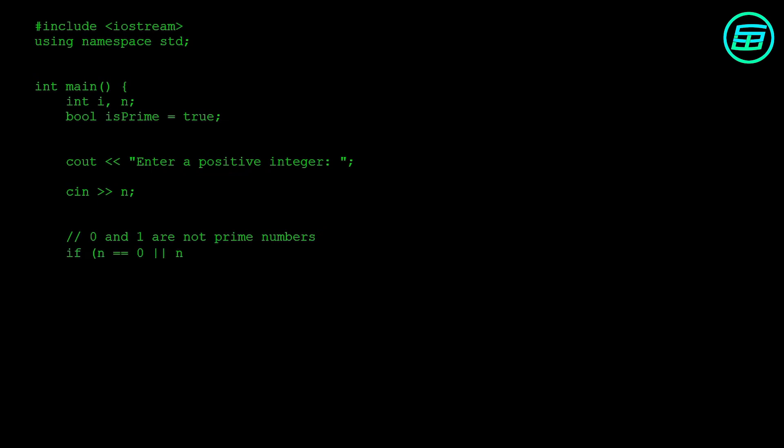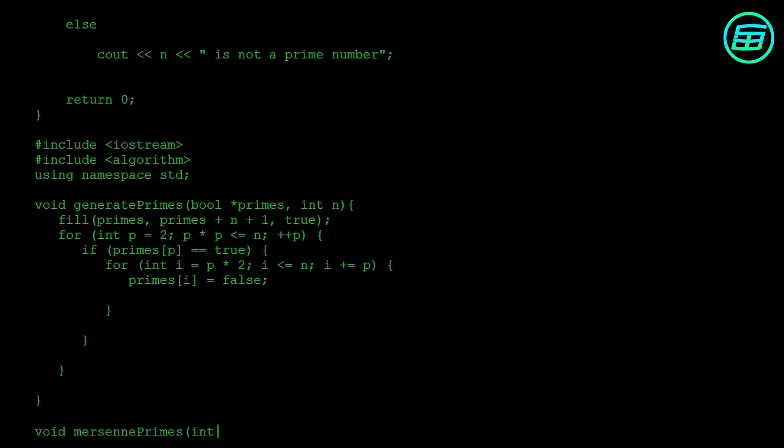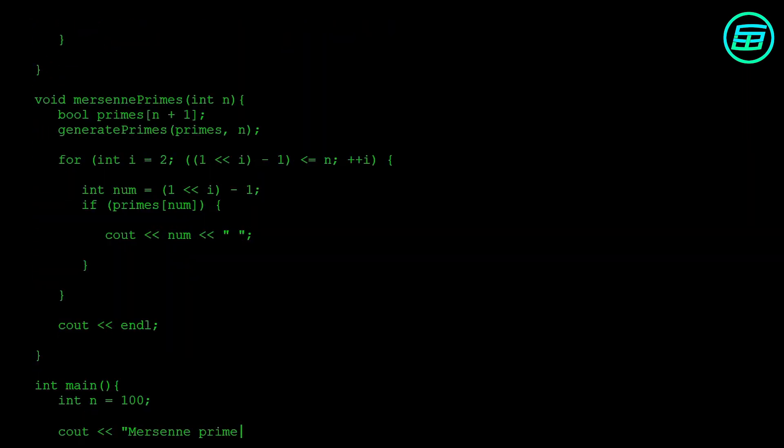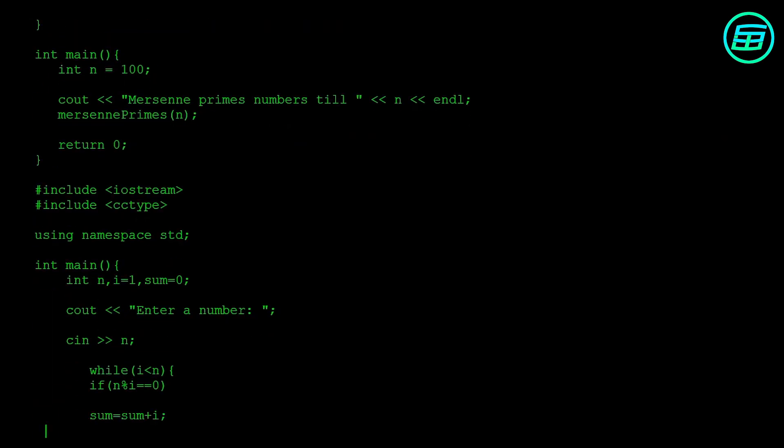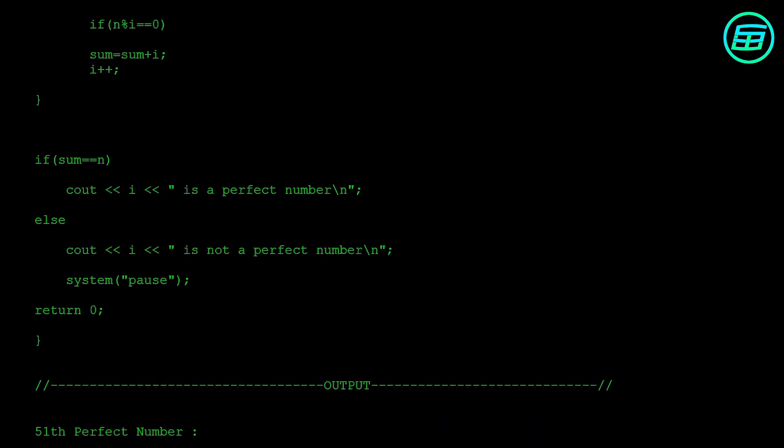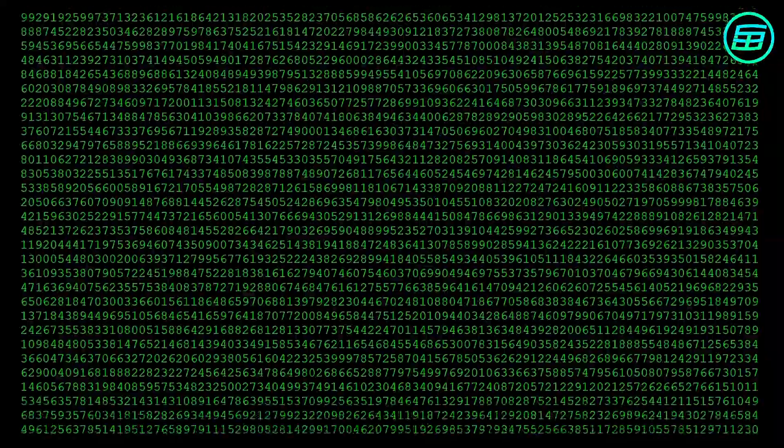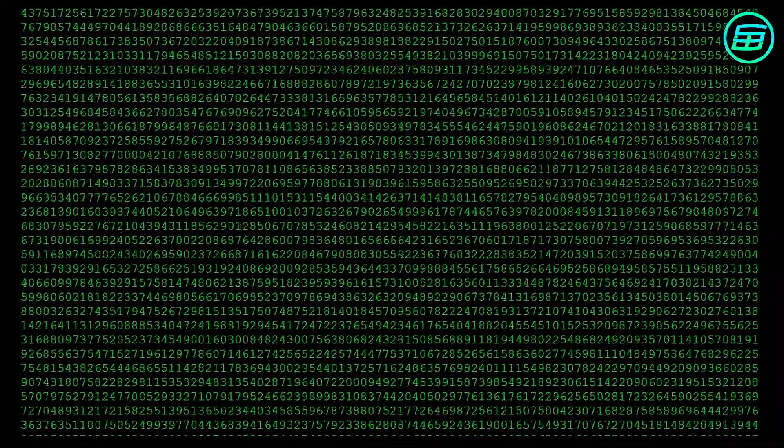The largest known perfect numbers have all been found by computers as a result of searching for new Mersenne primes. As of February 2021, the current largest known perfect number, the 51st, is 2 to the 82,589,932 times 2 to the 82,589,933 minus 1. Written out in full, it involves just under 50 million digits.